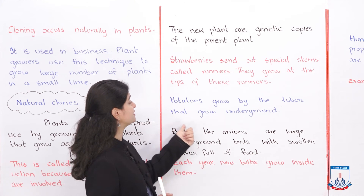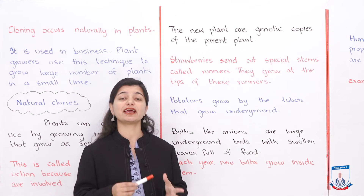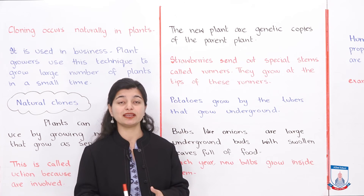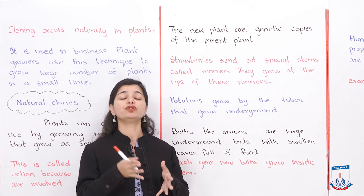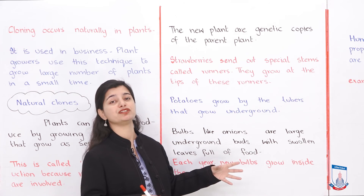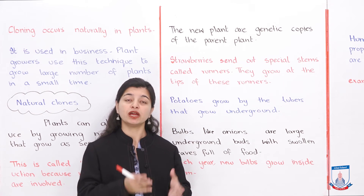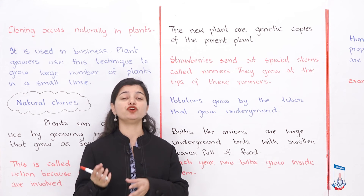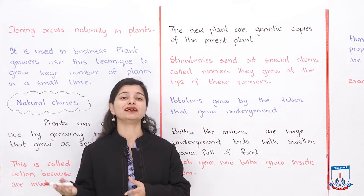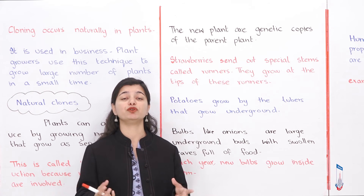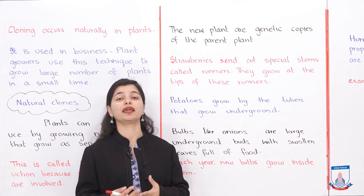Potatoes grow by tubers that grow underground. One potato grows underground and at some point the roots become a tuber. Food is stored in the tuber and it helps grow new potatoes. So from one potato, new potatoes grow via tubers, and they are identical — they are cloned and genetically reproduced as an exact copy of the parent plant.